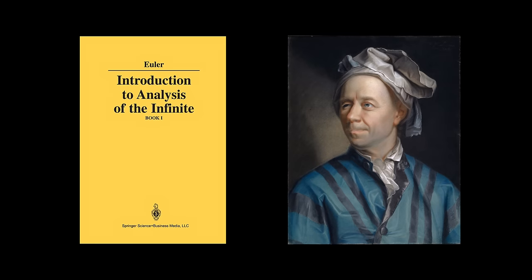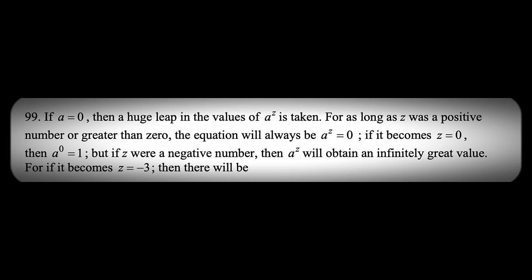You may think this argument is stupid, but it was Euler who used a similar logic to prove that 0 to the power of 0 is 1. In his book, Introduction to the Analysis of the Infinite 300 years ago, Euler made it very clear that a to the power of 0 is 1, even when a is 0.